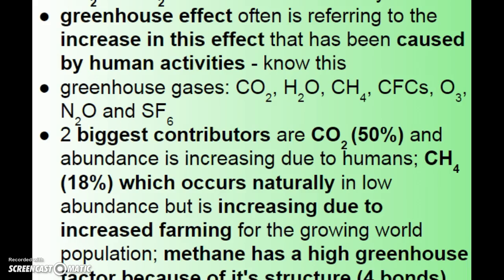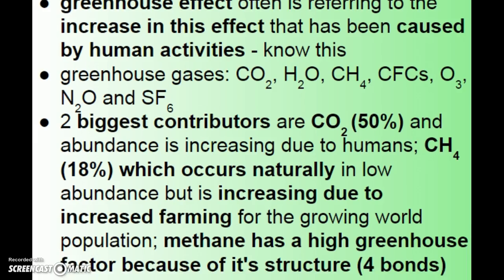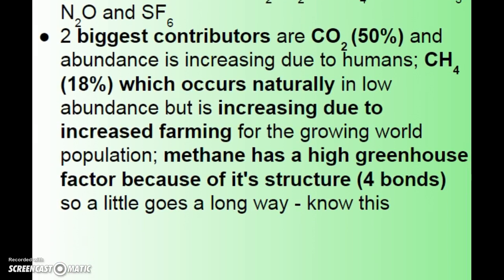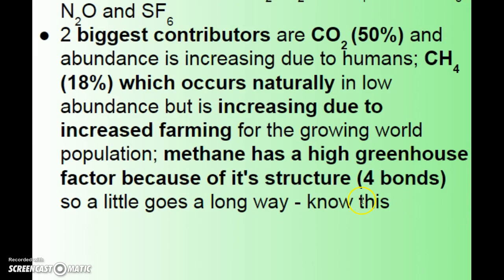The two big ones by far are CO2 and methane. CO2's increased abundance is absolutely due to human activity, especially burning fossil fuels for transportation or heat. CH4 is increasing because we have more and more farming, and methane is primarily produced as a byproduct of farming.